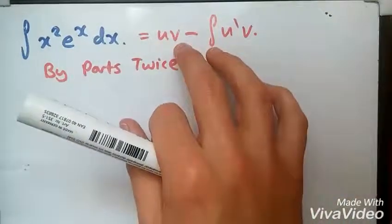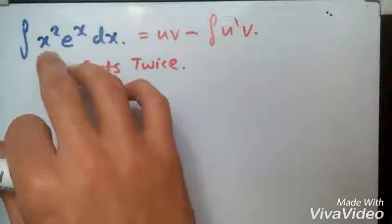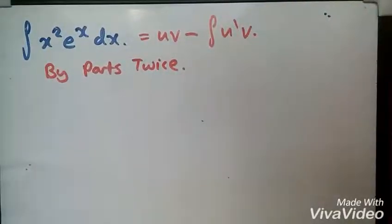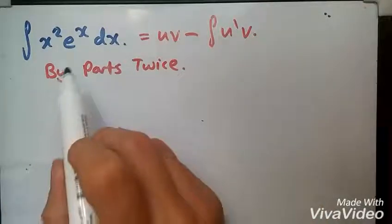Here is the formula where u and v are selected from this equation. One of them will be u and one will be v prime. Using the usual integration by parts formula, I need to select a u and v prime.